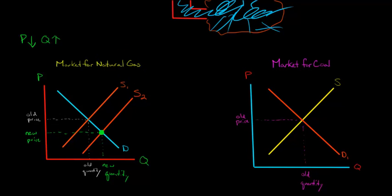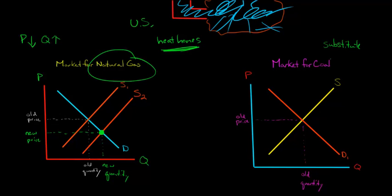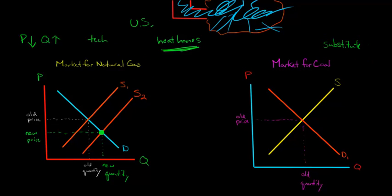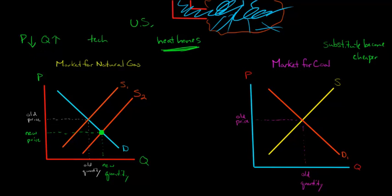Now think about this practically. Coal is a substitute for natural gas because coal can also be used to heat homes. In the United States, where fracking has had a really big impact, we could use either natural gas or coal to heat people's homes. But if this new technology is decreasing the price of natural gas, what is going to happen to the market for coal? A substitute for coal has become cheaper, so people can use natural gas instead of coal. The price of natural gas drops — what's that going to do to demand for coal?